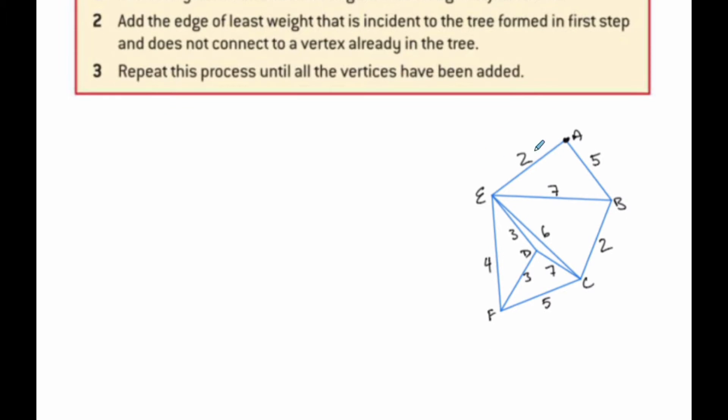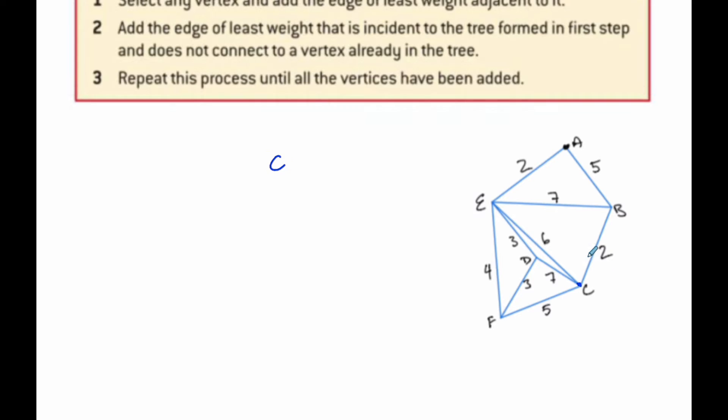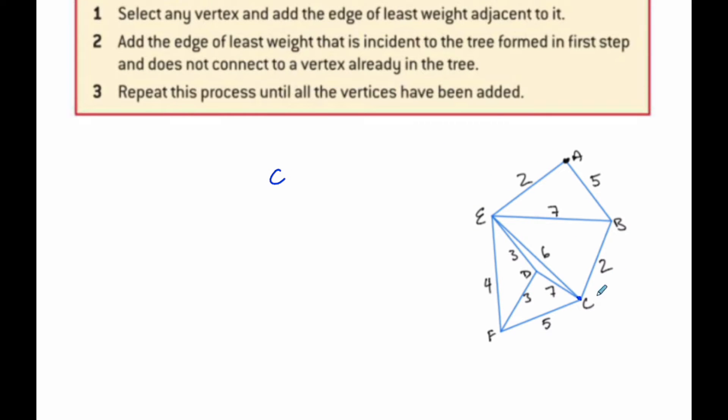So I start here, and I usually start with A, but for illustration purposes I'm going to randomly start with C. So from C, I'm going to go to B, because it says go to the least weight adjacent. So I'm going to go C to B, which is 2.